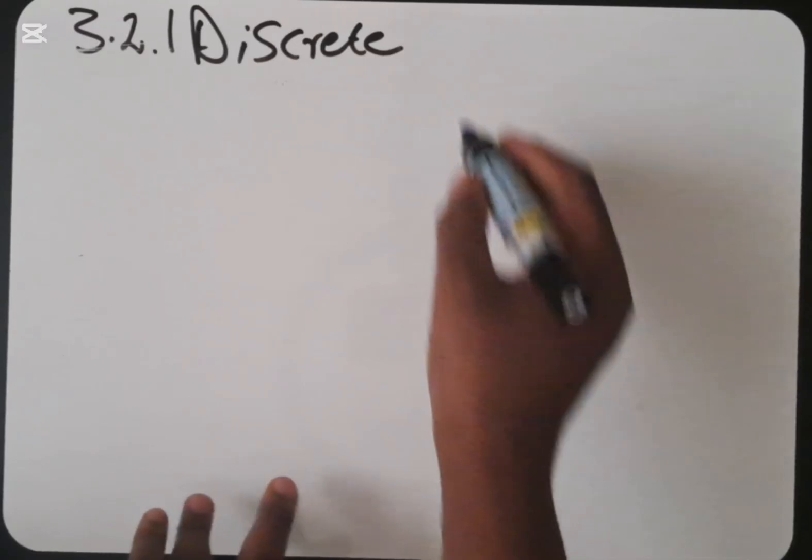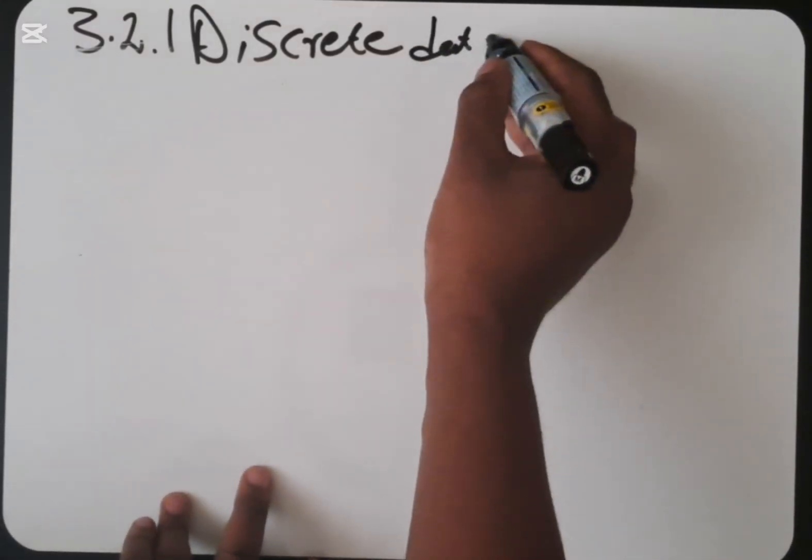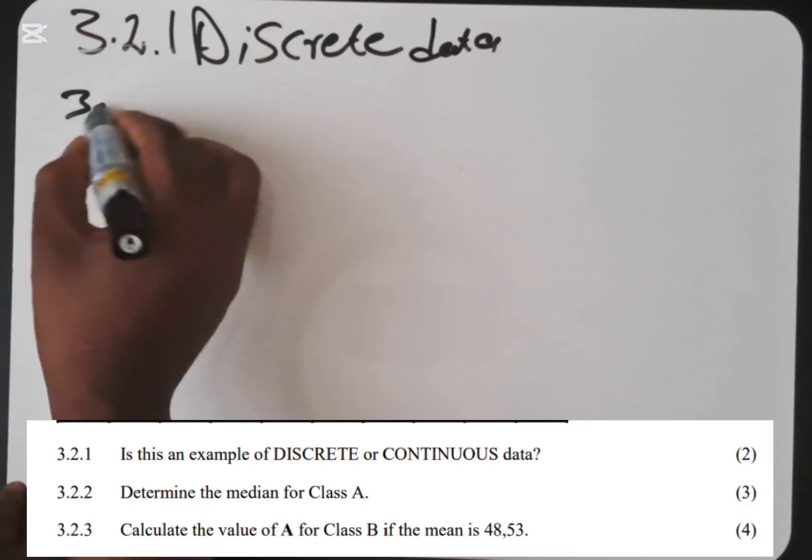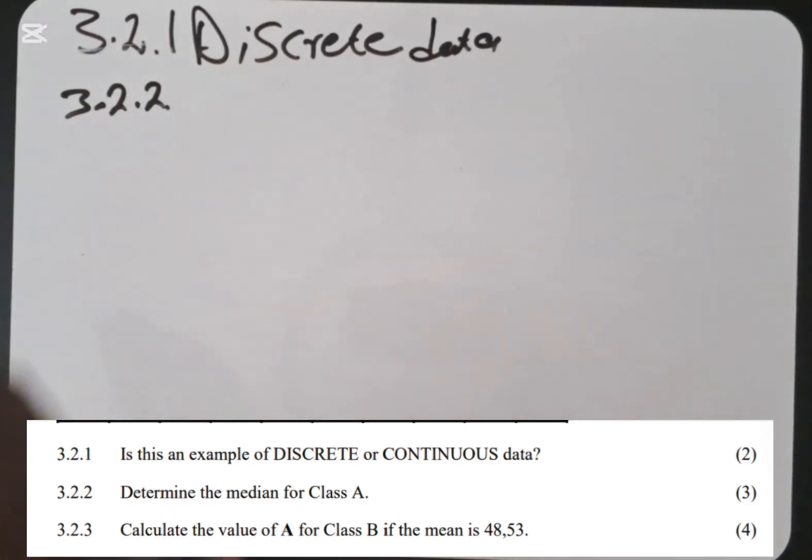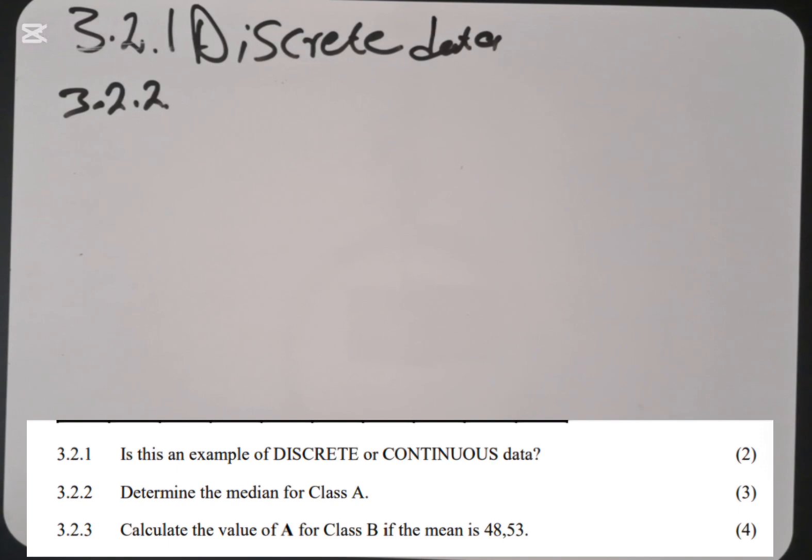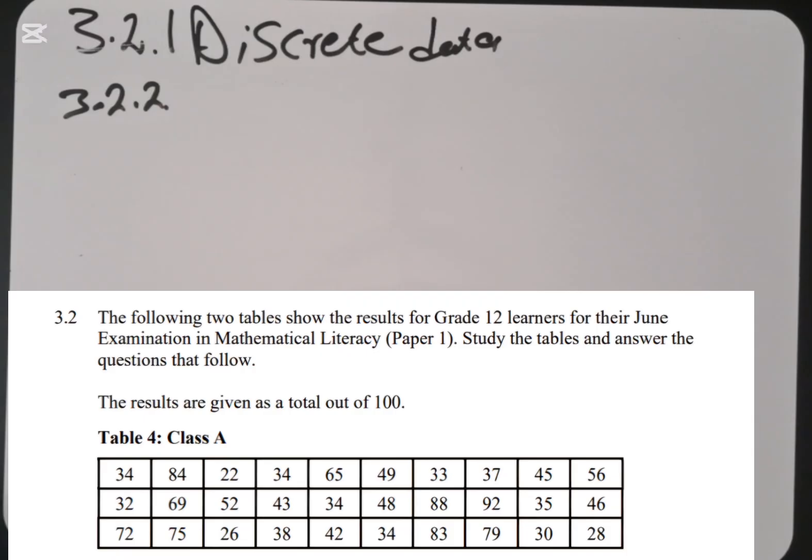What you need to understand is that when we are dealing with discrete data, these are data that are obtained through counting. Continuous are data that are obtained through measuring. This is a discrete data because a teacher needed to count all the ticks on the script.